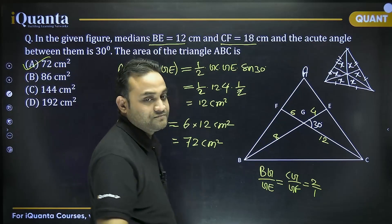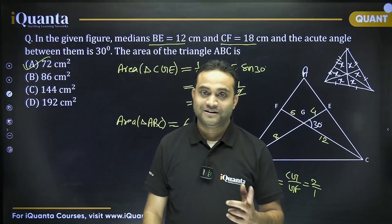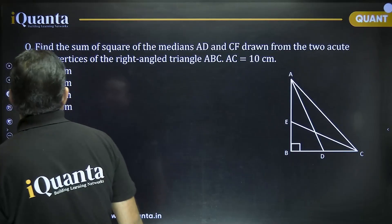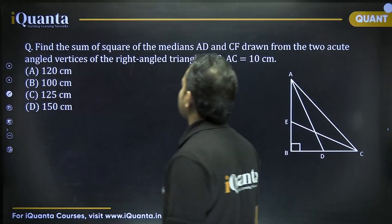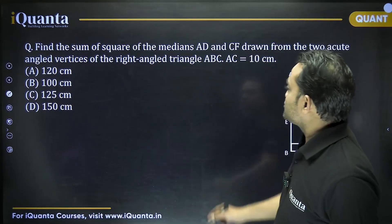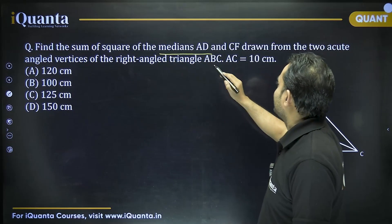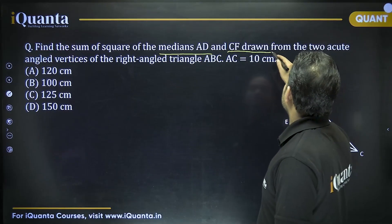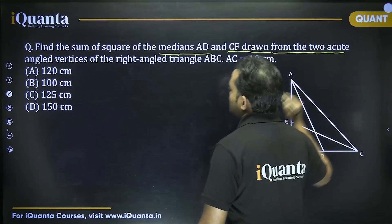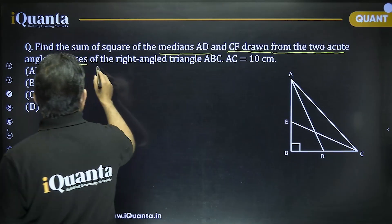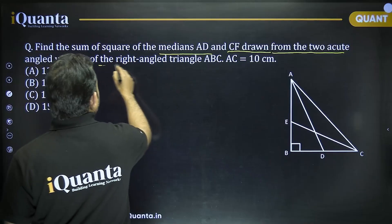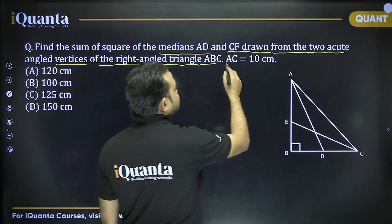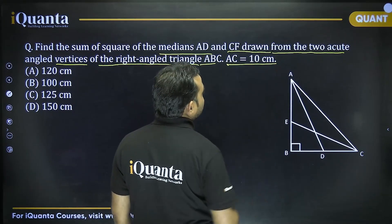The next question says: find the sum of squares of the medians AD and CF drawn from two acute angle vertices of right triangle ABC, where AC is equal to 10.